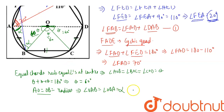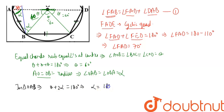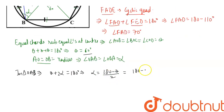In triangle OAB, applying the angle sum property: θ + alpha + alpha = 180°, so theta + 2·alpha = 180°. With θ = 60°, we get alpha = (180 − 60) / 2 = 120 / 2 = 60 degrees. So angle DAB = 60 degrees.